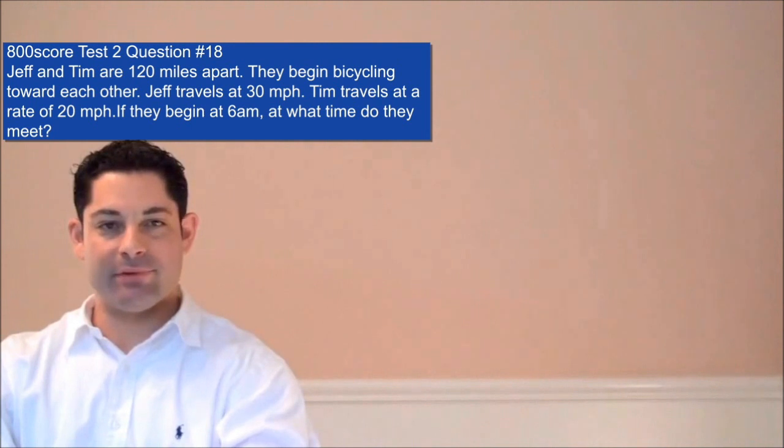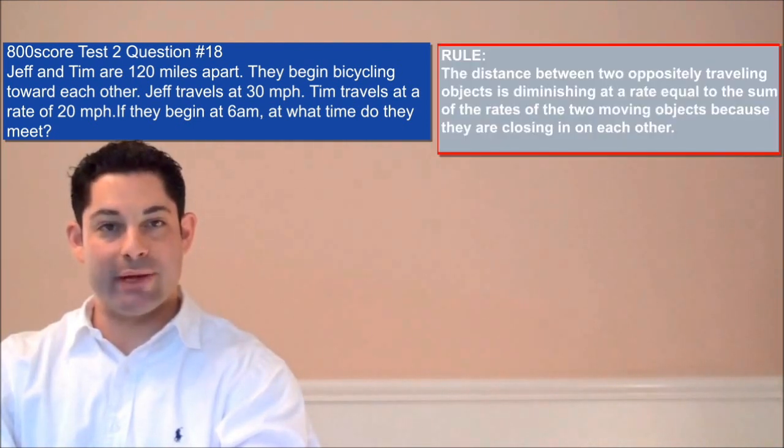One of the most common types of rate problems involve objects that are traveling in opposite directions. The main concept is the distance between the two oppositely traveling objects is diminishing at a rate equal to the sum of the rates of the two moving objects.